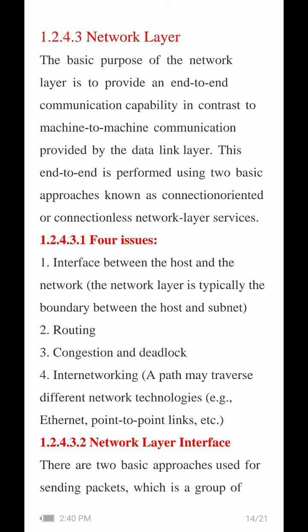The second issue is the routing of the packet. Third is congestion and deadlock. Fourth is internetworking — a path may traverse between different network technologies, for example Ethernet or point-to-point links. The network layer should address this issue of different networks so that packets may traverse in this heterogeneous environment.